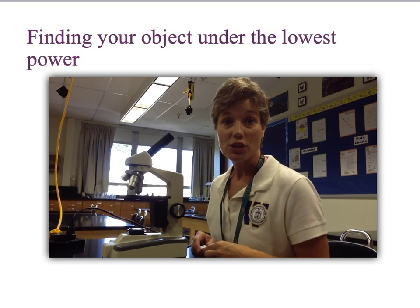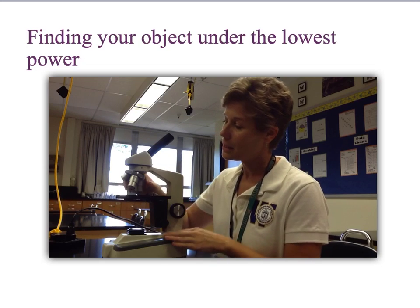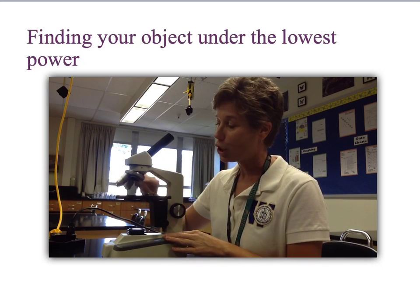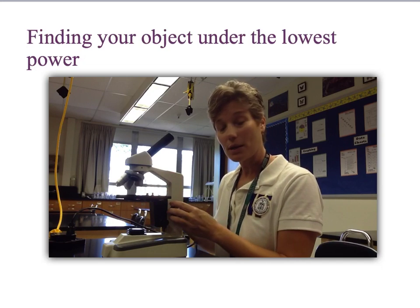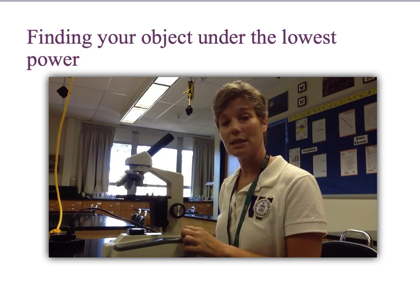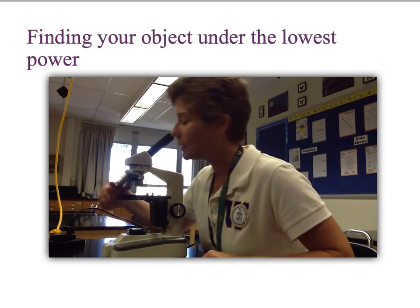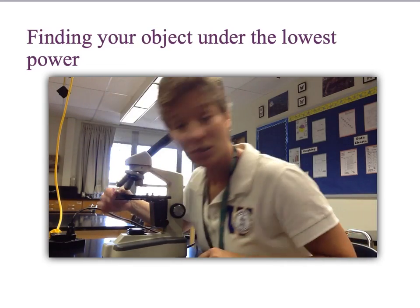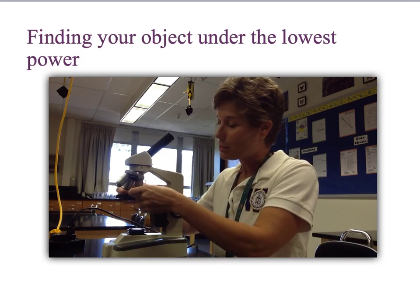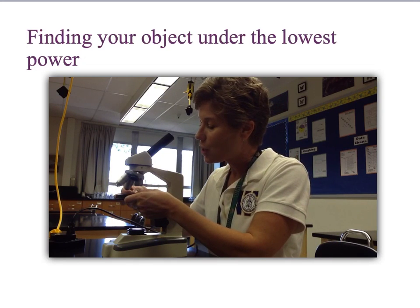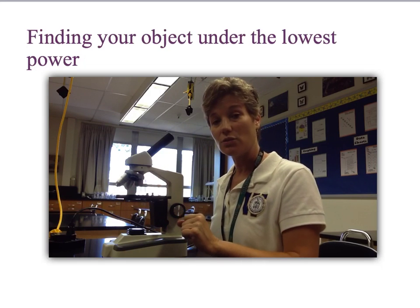When ready to use the microscope, first make sure it is set up. Always start with the lowest power objective. Start with the stage all the way up using the coarse focus knob, make sure the light source is on, and the diaphragm is set to 4. Then take your slide and place it on the stage so that your object, which is under the cover slip, is underneath the lens.